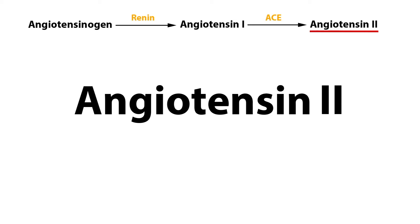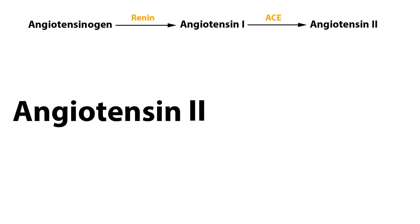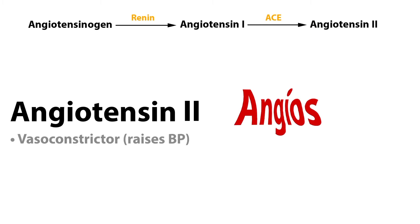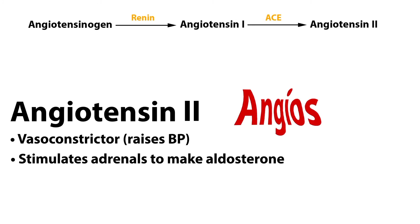Angiotensin II has two most important actions. First, it is a potent vasoconstrictor — it acts on angiotensin receptors on vascular smooth muscle cells, causing vasoconstriction and raising blood pressure. Second, it stimulates the adrenal glands to secrete aldosterone from the zona glomerulosa of the adrenal cortex.